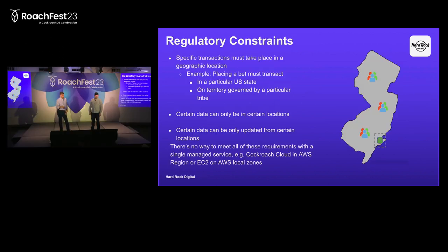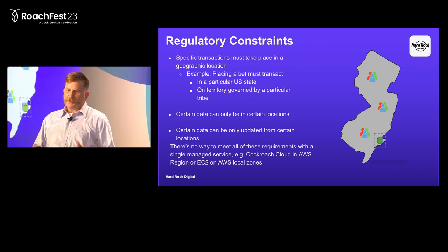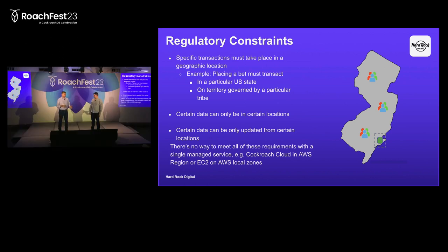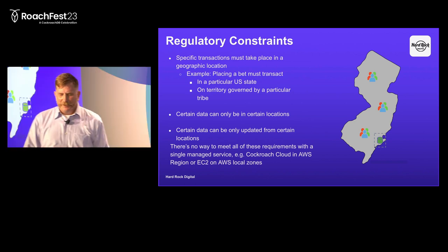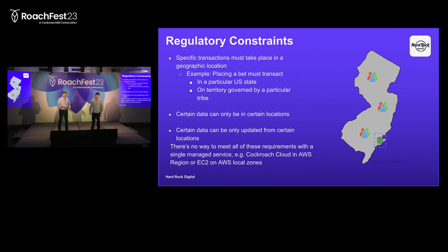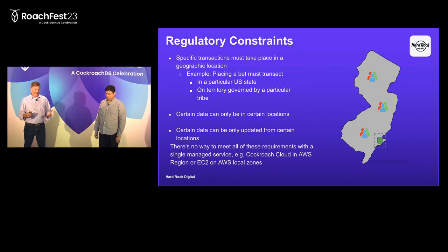Back to the regulatory constraints. As mentioned this morning in the keynote, players can't wager across state lines — it's called the Wire Act. Even beyond that, players must be in a particular state to wager, and certain transactions have to take place within an even tighter geographic constraint. It also varies by state, and this is what is dictating our options for architecture and deployment.